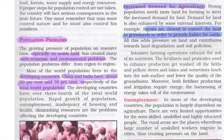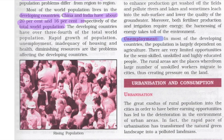Both fertilizer production and irrigation require energy, so the harnessing of energy takes a toll on the environment. Unemployment is one of the biggest problems in developing countries, where the population largely depends on agriculture but there are very limited opportunities for semi-skilled, unskilled, and highly educated people. Therefore, large numbers of unskilled workers migrate from rural areas to cities, creating additional pressure on land.